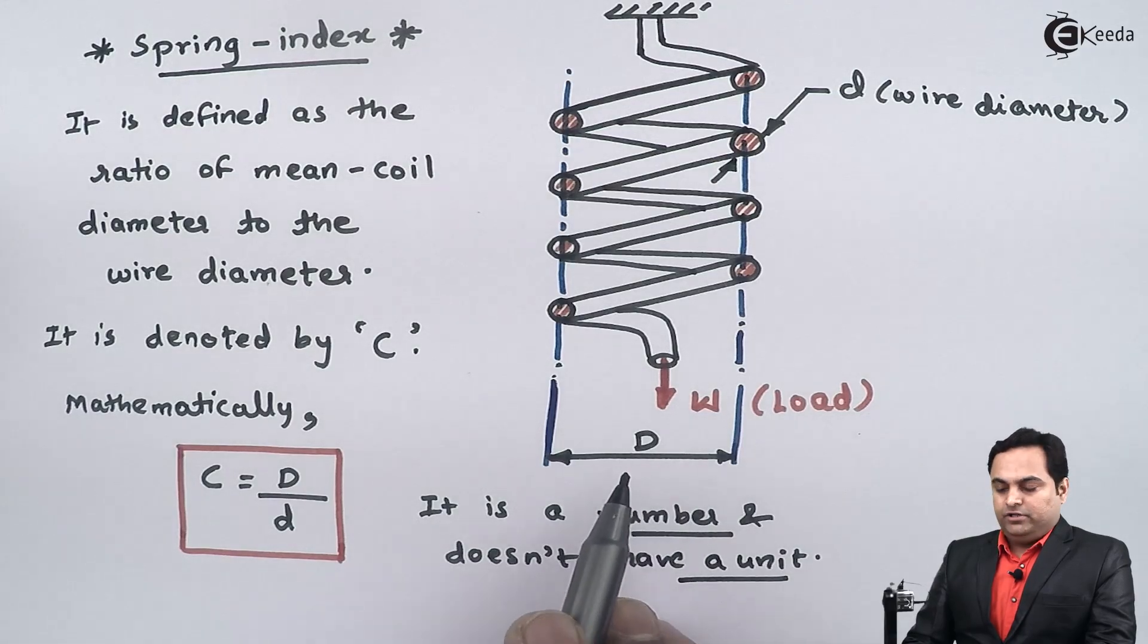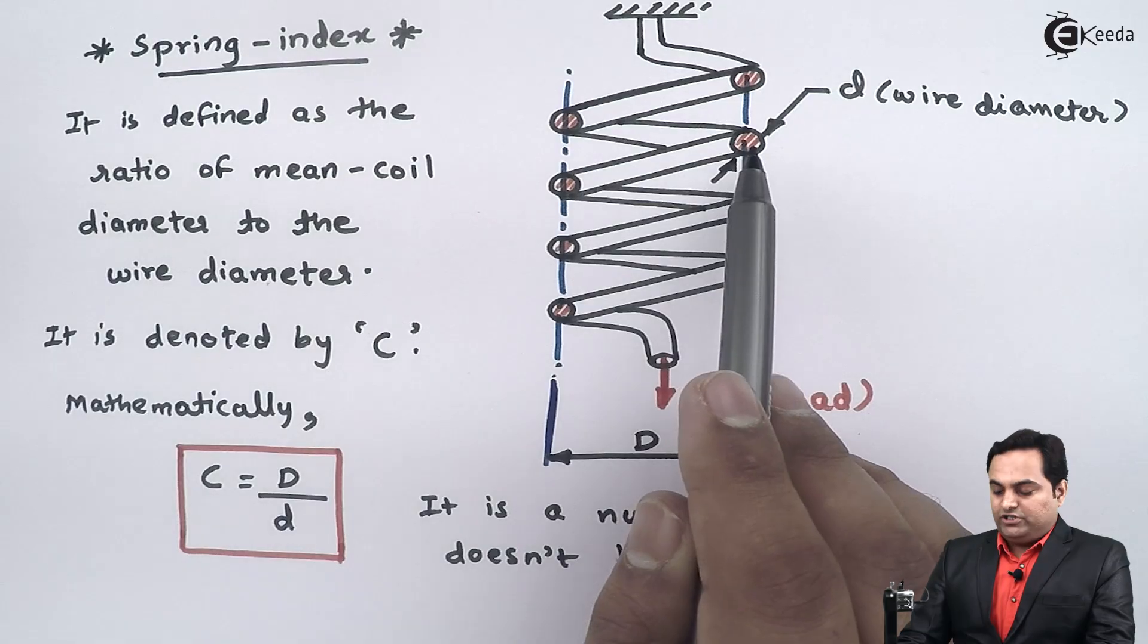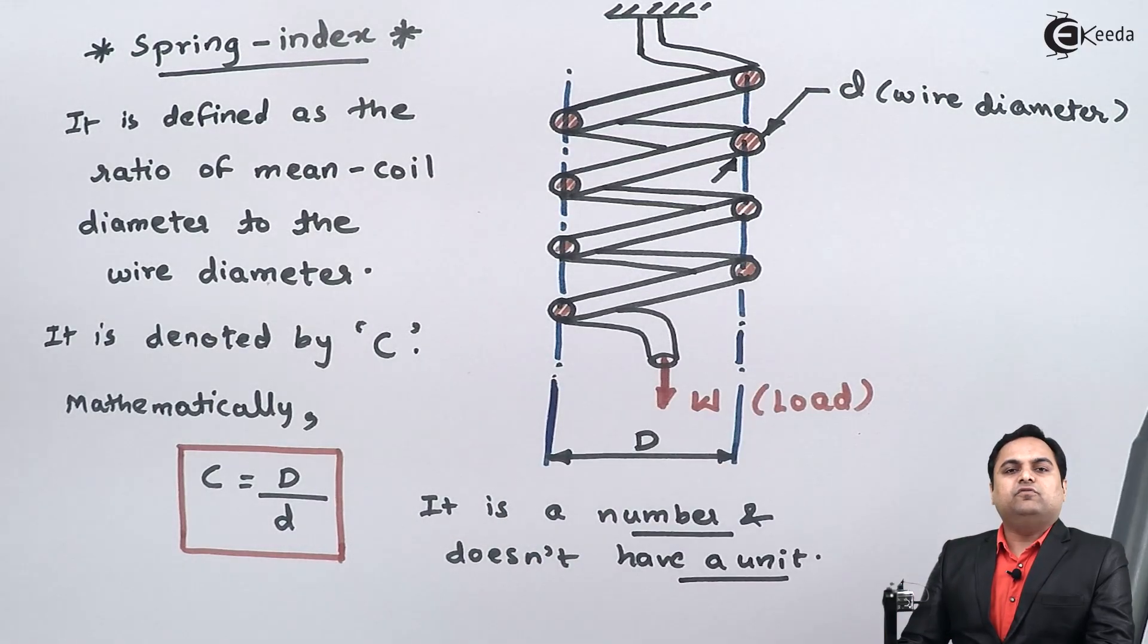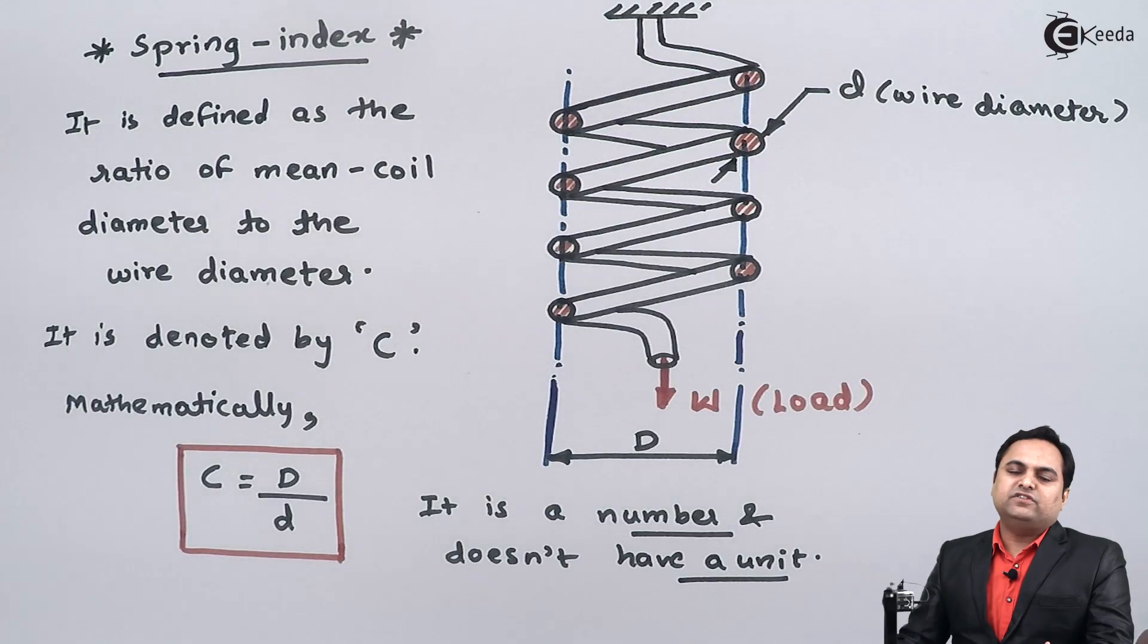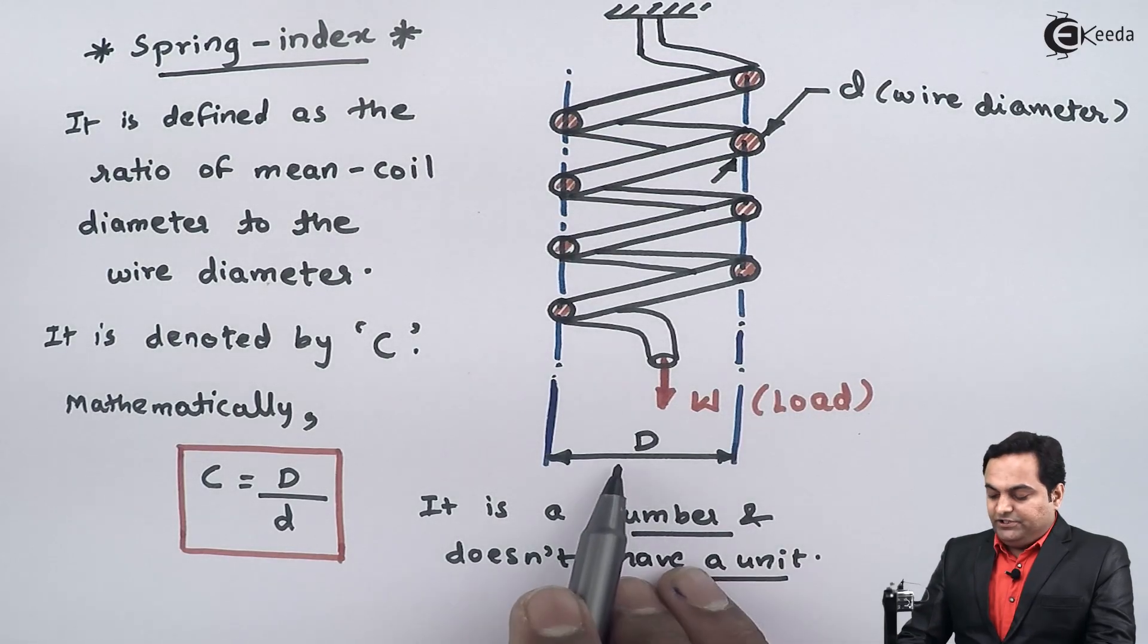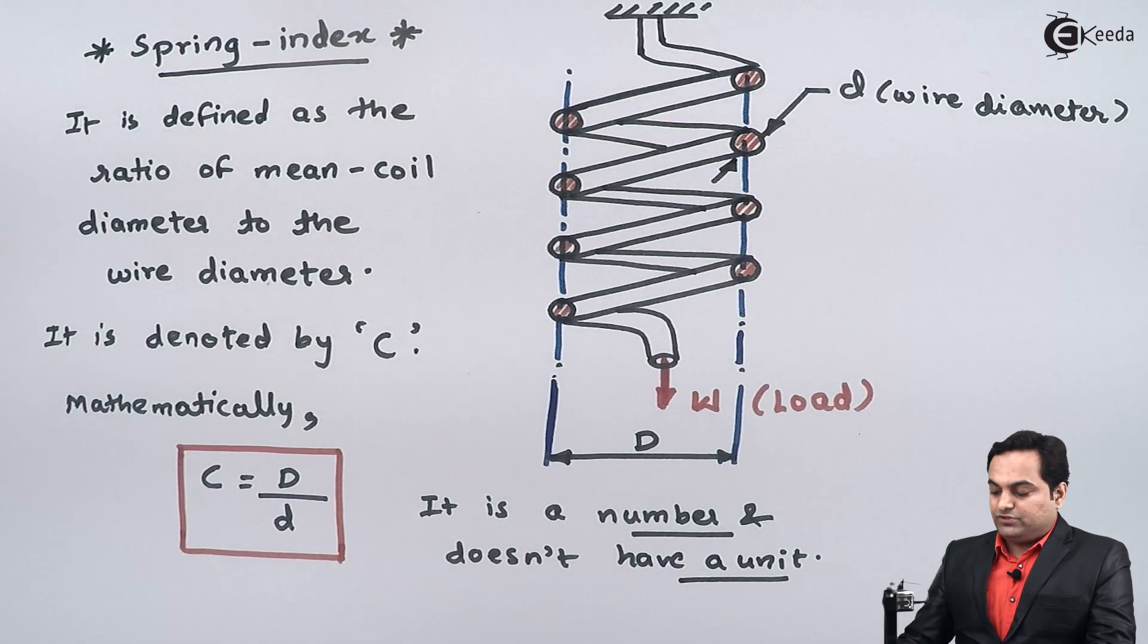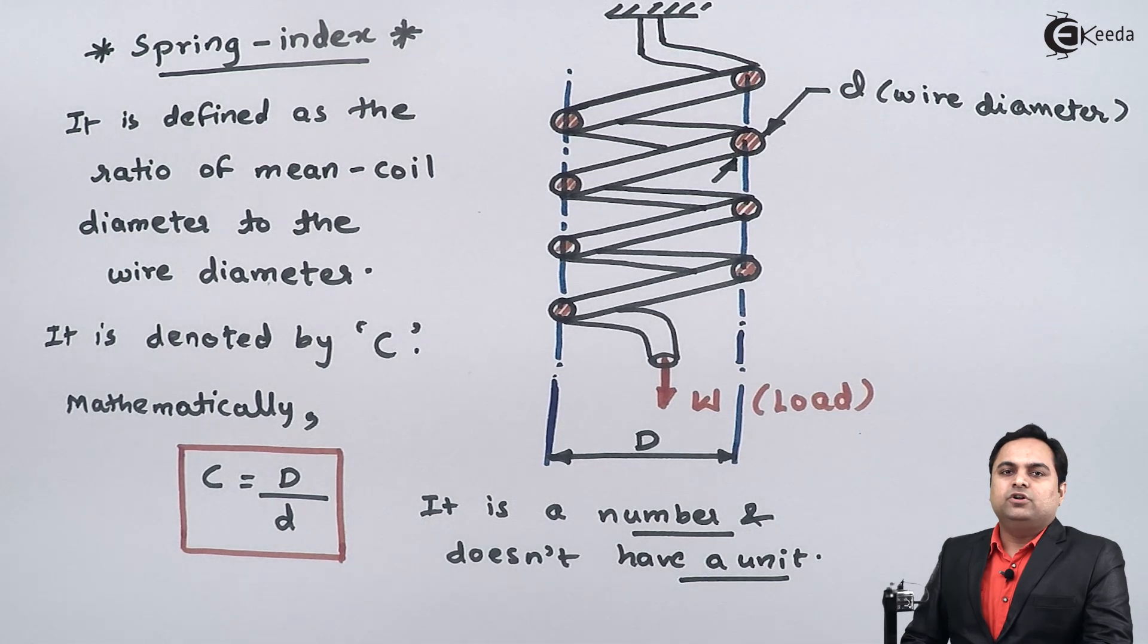Once we know the mean coil diameter, we can determine how much space this spring requires and whether it fits within the available size. Spring index is used in the design of springs and is one of the most important terms when designing springs.